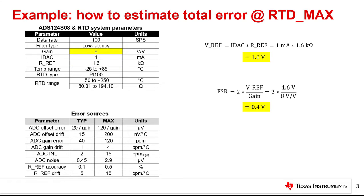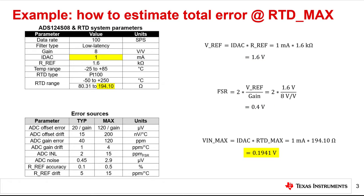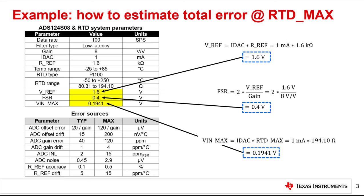Next, we need the full scale range, or FSR. The specific FSR equation for the ADS124S08 is shown, and the calculated result is 0.4 volts. Third, our estimated error is always calculated at a specific RTD resistance, which in this case is RTD max. We just need to calculate the maximum input voltage to the ADC, VNmax. This value is the product of the ideal IDAC current and the maximum RTD resistance, which is 0.1941 volts. Finally, we can add these values to the system parameters table as shown.